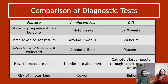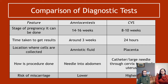In the comparison diagram you can see the different stages of development — during CVS the fetus is basically just a blob, whereas during amniocentesis it's recognisably a fetus. The time taken to get results is around three weeks for amniocentesis versus 24 hours for CVS.